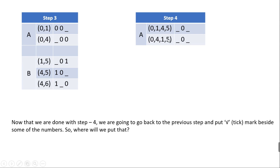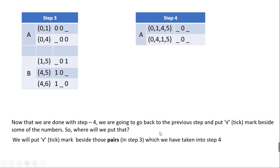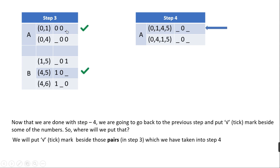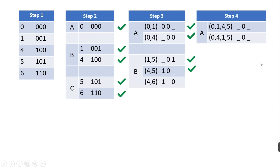Now that Step 4 is done, we go back to Step 3 and put tick marks beside those pairs which we took into Step 4. For the first set 0,1,4,5 I put tick marks beside the pairs 0,1 and 4,5. For 0,4,1,5 I put tick marks on pairs 0,4 and 1,5. All necessary tick marks on Step 3 are now placed.